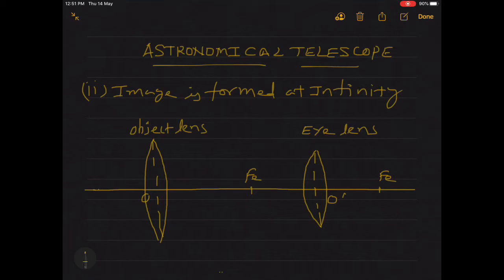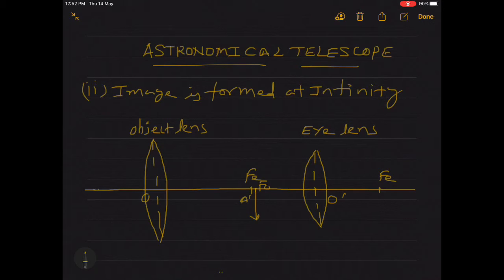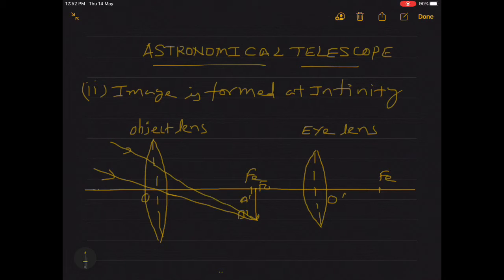Since the eye lens is working as a simple microscope, to get the image at infinity the image formed by the object lens should lie very close to the focus of the eye lens. This is f_o, and the image is A-dash B-dash. This image is formed by the object lens by its two rays: one passing through the optical center and another one is the parallel ray of the object lens.